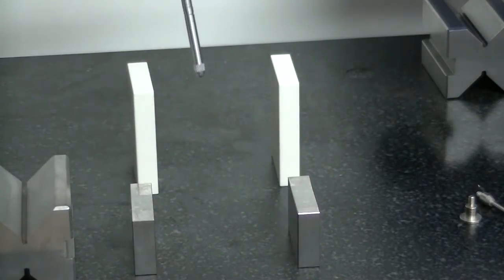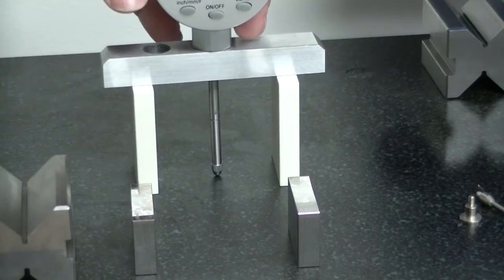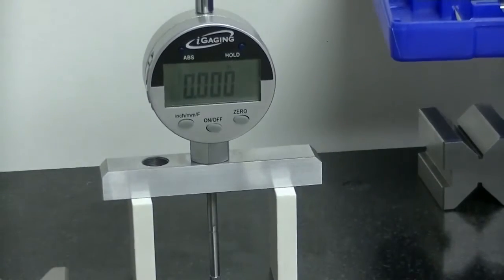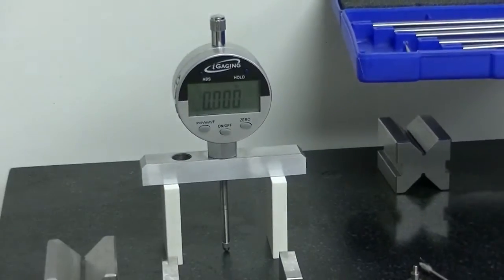Set that down and it should still read zero, which it does. So that shows that the one-inch rod that I just put on is actually one inch.